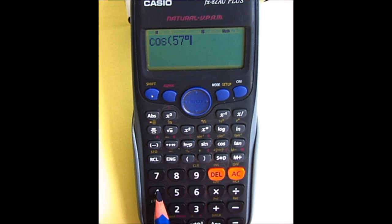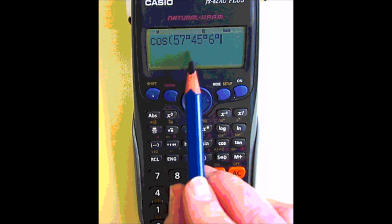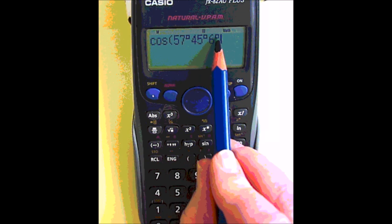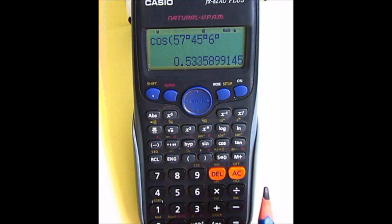And then 45 minutes and then 6 seconds. You'll notice it doesn't have the dash and double dash as it does in the other calculator. And there's the cosine of the angle.